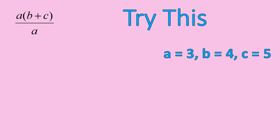Everywhere I see the letter a, I'm going to replace it with the number 3. Everywhere I see the letter b, I'm going to replace it with the number 4. And where I see the letter c, I'm going to replace it with the number 5. It should look like this. 3 times the quantity of 4 plus 5 divided by 3.